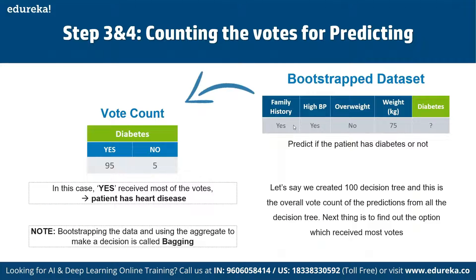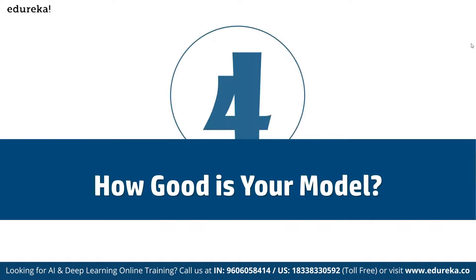To use Random Forest for prediction — for example, predicting if a patient has diabetes — we run the sample through all decision trees. If yes receives the most votes, the patient has diabetes. If we create a hundred decision trees, we count the predictions from all trees and find the option that receives the most votes. This is the bootstrap aggregation component.